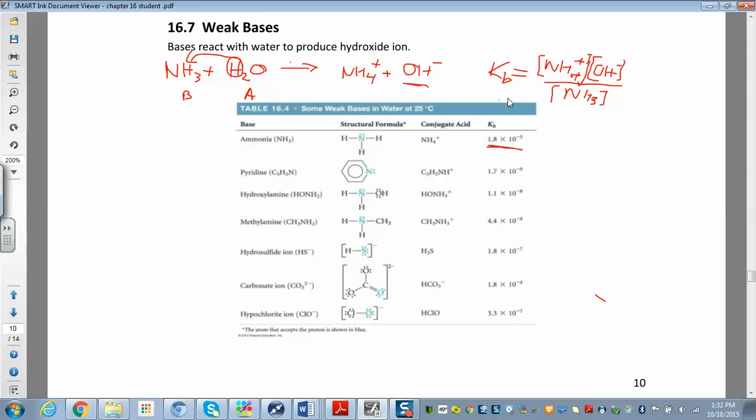That K is the equilibrium constant. B just means it's a base reaction, base association. So you have this base ionizing here. You're always going to end up with hydroxide in that type of reaction.